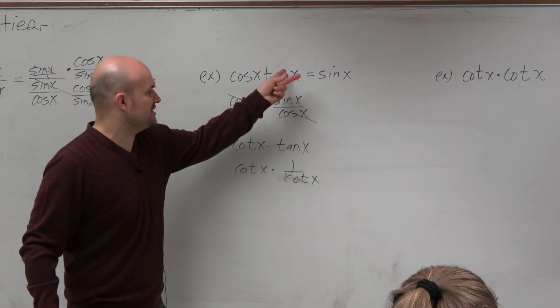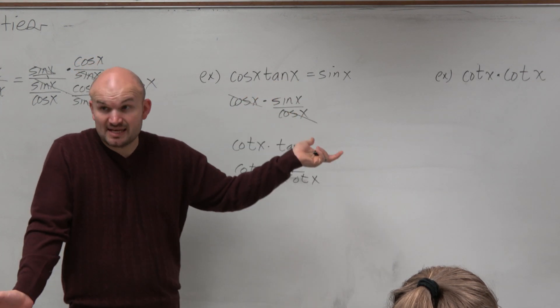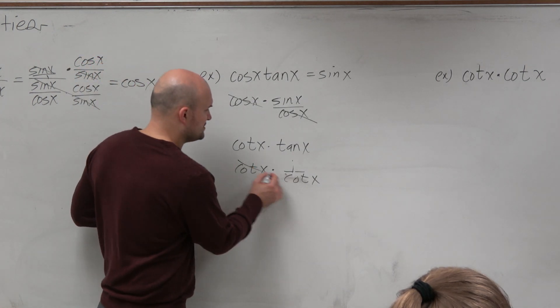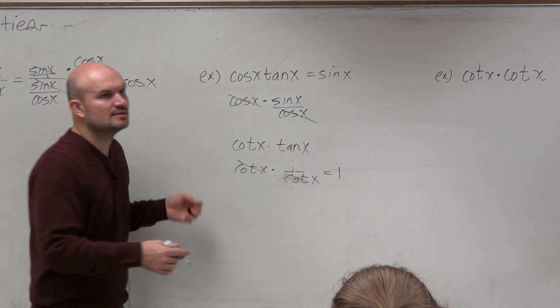So don't always do tangent as sine over cosine. A lot of times that is helpful, but sometimes just thinking of tangent as 1 over cotangent makes you see that you could simplify it another way.